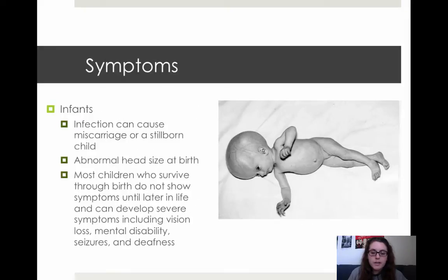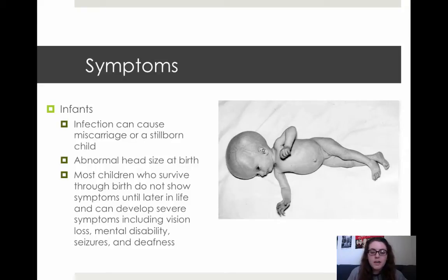In infants who have been infected through the congenital process, the infection can cause a miscarriage or a stillborn child. If the child survives birth, they typically will have an abnormal head size if they show symptoms at birth, and they can also contract jaundice from this disease. In a lot of cases, the child won't show any signs of infection until later in life, when their development is impeded, leading to vision loss, mental disability, seizures, and deafness, as well as other symptoms.